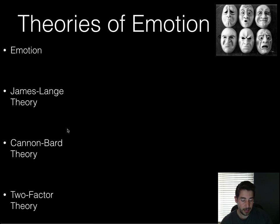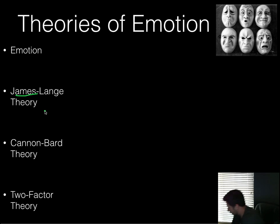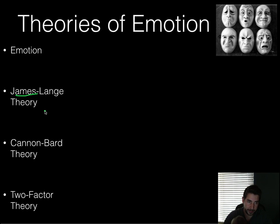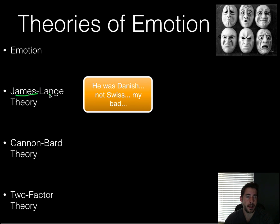So the three types of emotion are: the James-Lange theory. This is the same James from William James, the father of psychology here in the United States. Mrs. L is not feeling well today, so I'm on daddy duty. And Lang is, I think, a Swiss psychologist.